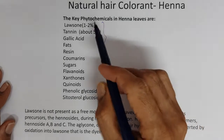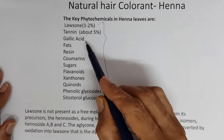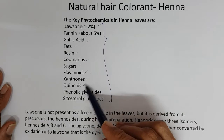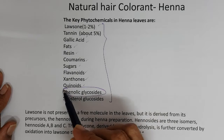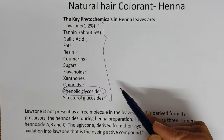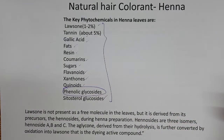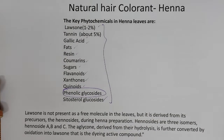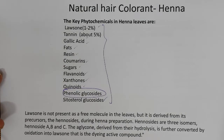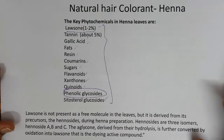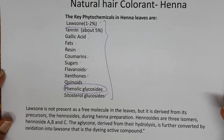What are the key constituents of henna? Classical textbooks list lawsone, tannin, gallic acid, fats, resins, coumarins, sugars, flavonoids, xanthones, quinoids, phenolic glycosides, and cetosterol glucosides. Importantly, when you pluck fresh henna leaves and analyze for lawsone, you cannot identify lawsone — lawsone is not present as a free molecule in fresh henna leaves, even though classical textbooks cite one to two percent.